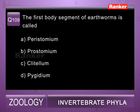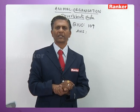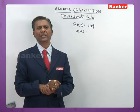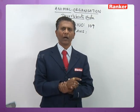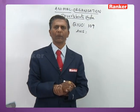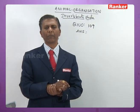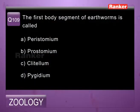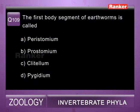Question 109: the first body segment of earthworm is called — a) peristomium, b) prostomium, c) clitellum, d) pygidium. The first formed or oldest segment at the anterior end is called peristomium or buccal segment. So the answer for 109th question is a) peristomium. Question 110: the buccal segment of earthworm is called — peristomium is also called buccal segment because it encloses the buccal cavity internally. So 110th question correct answer is b) peristomium.